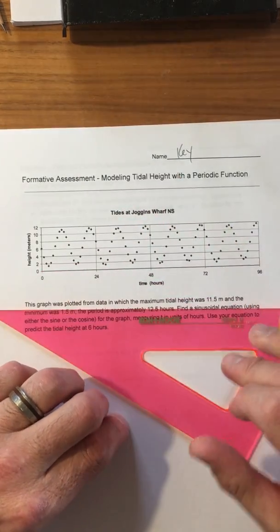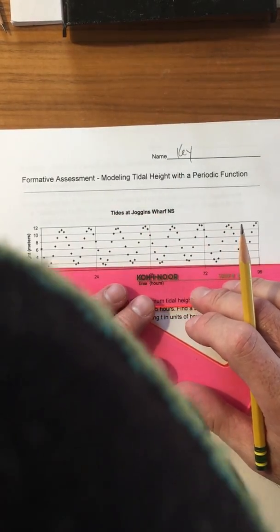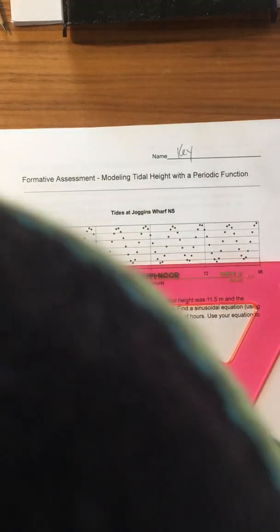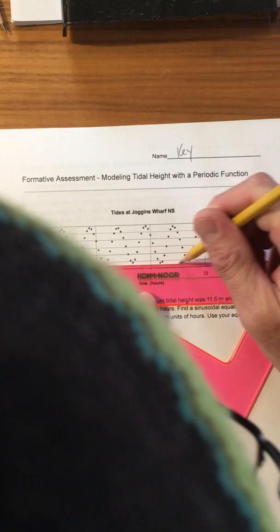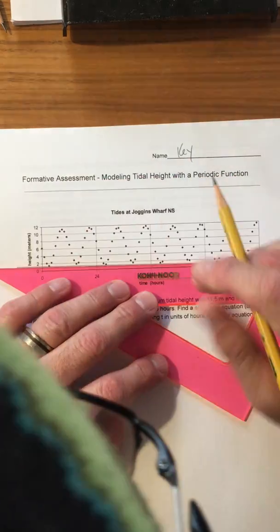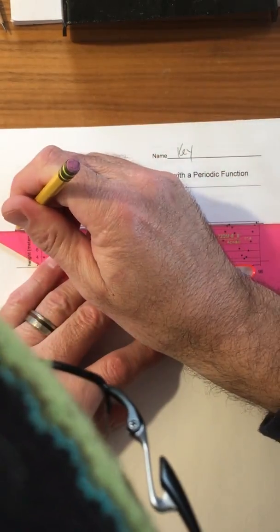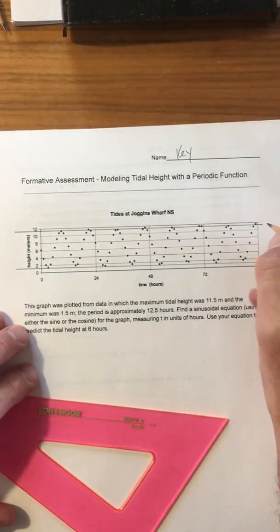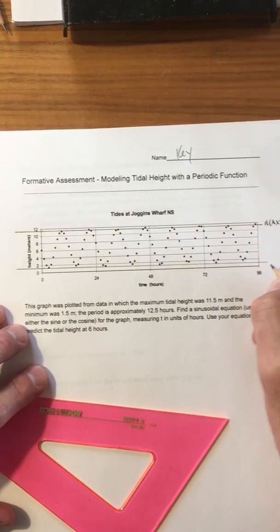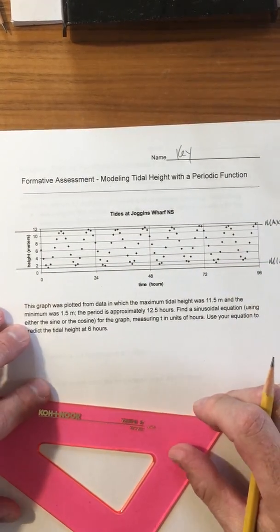Here's what I'm gonna do: I'm gonna find the minimums here and draw a horizontal line across. I'm gonna find the maximums and draw a horizontal line across. So there's the max and there's the min.